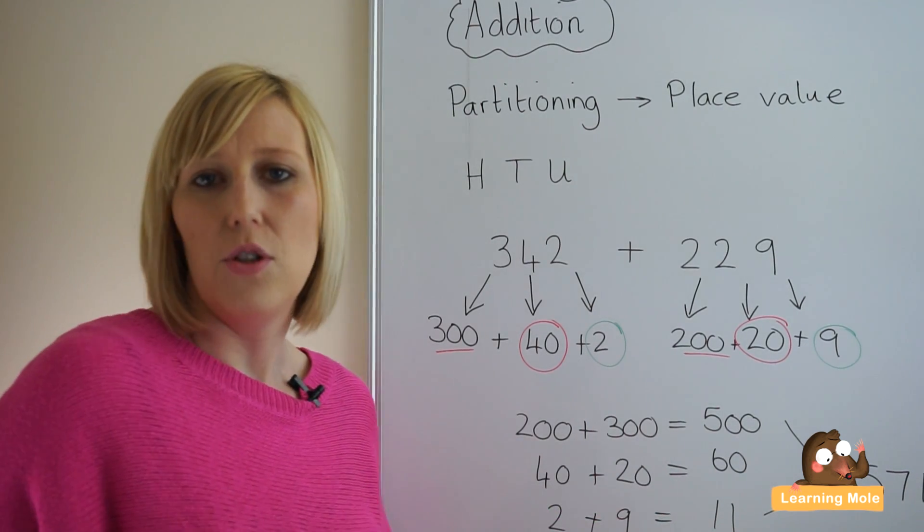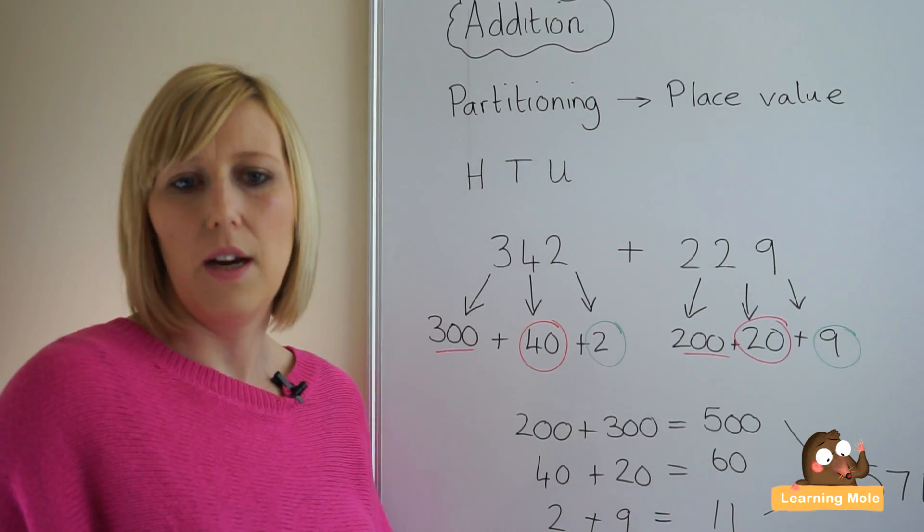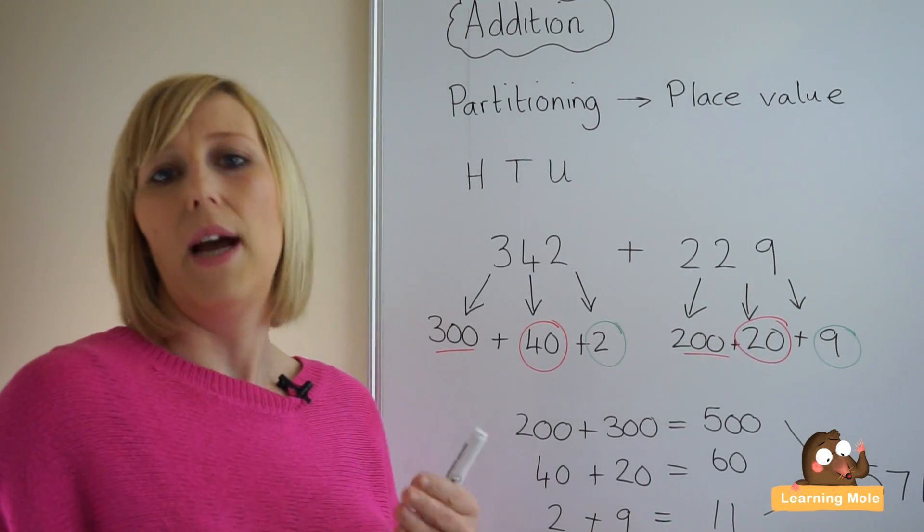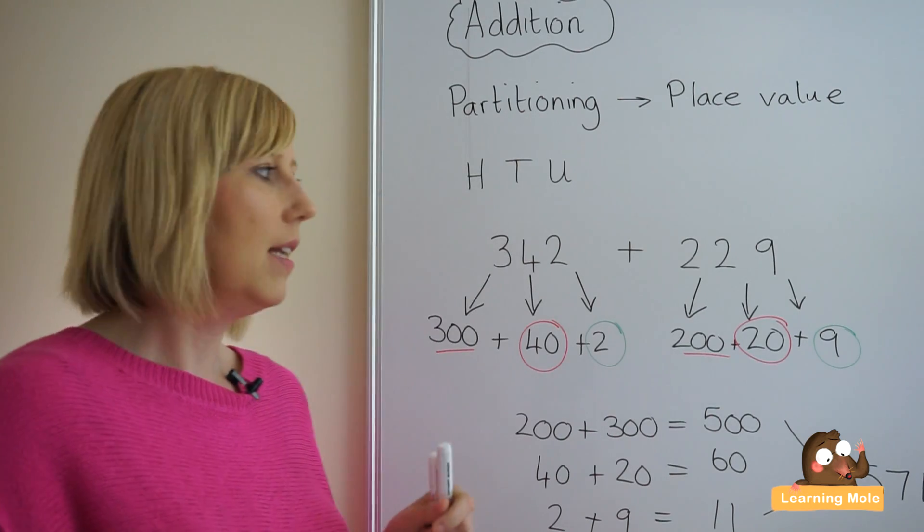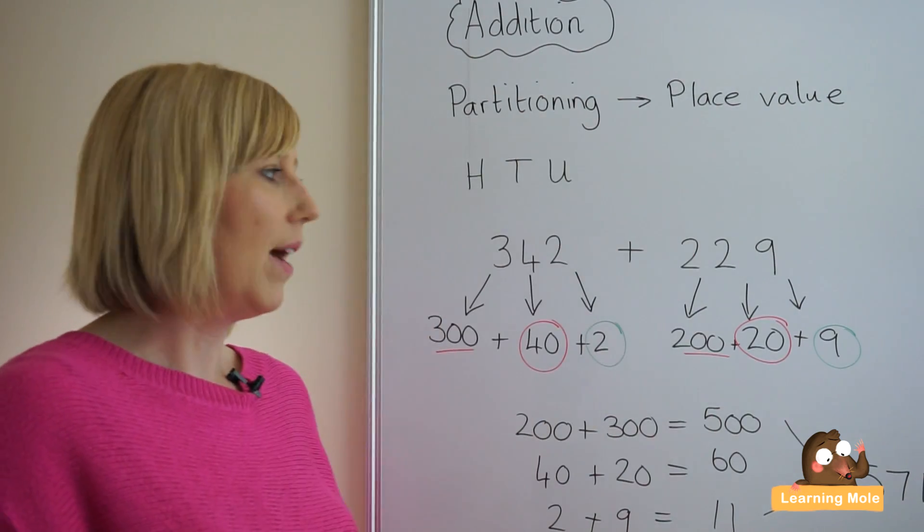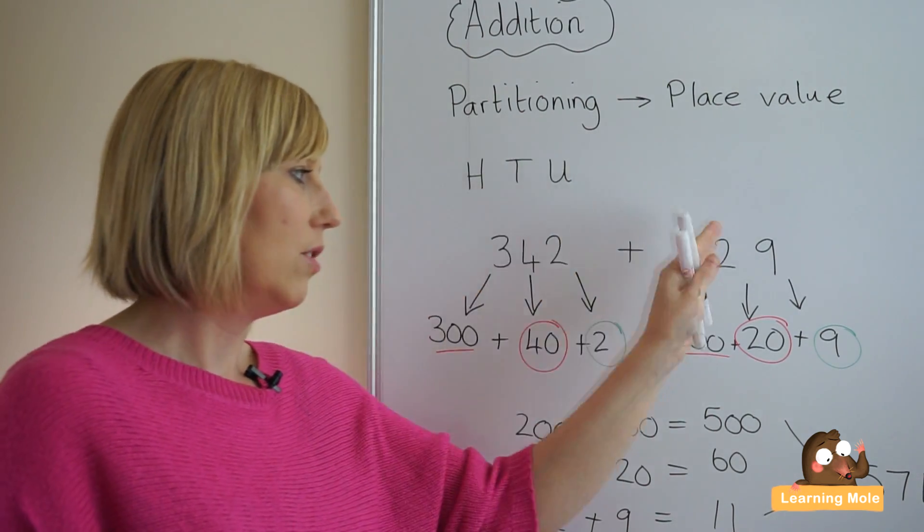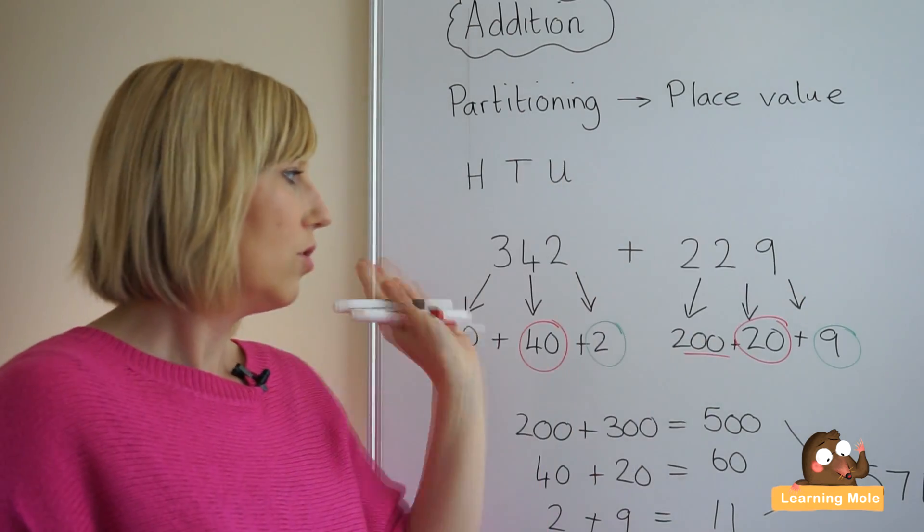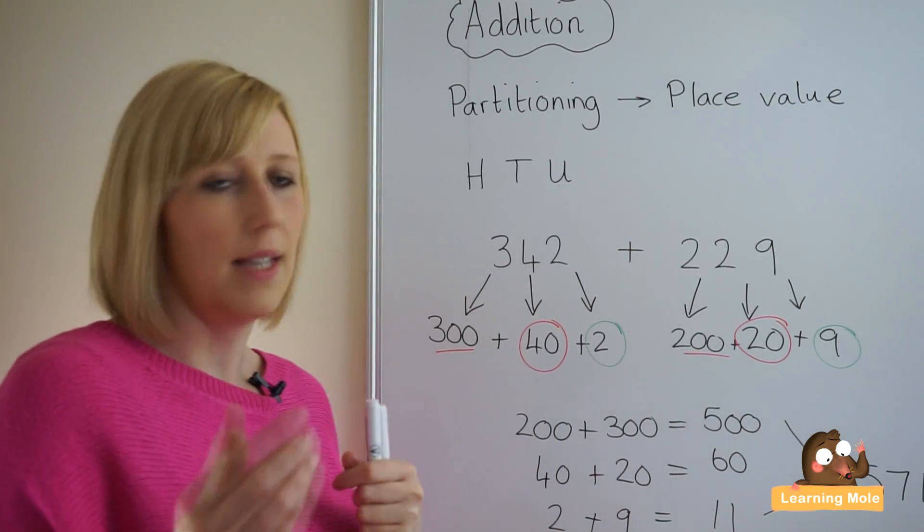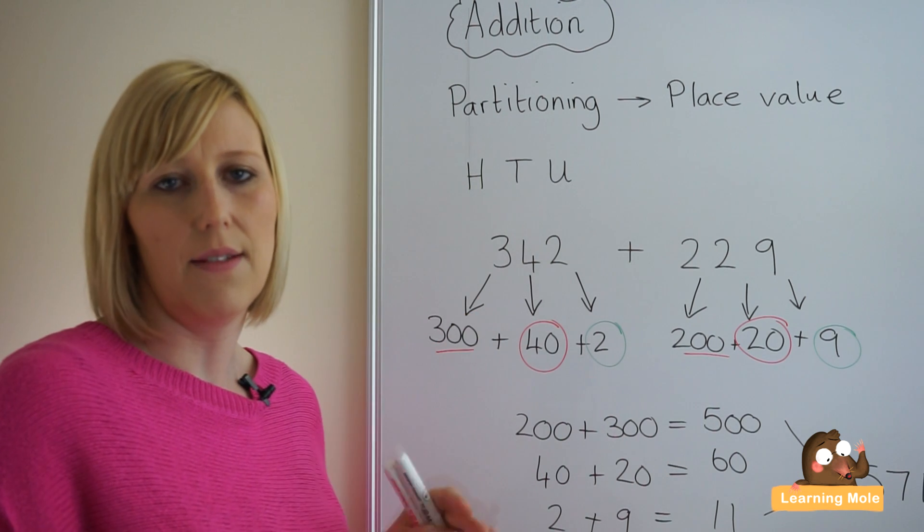If they're able to do that on paper, then start to ask them to try and do it in their heads. They're thinking, I know that 300 and 200 is 500, 40 and 20 is 60, 2 and 9 is 11, which is 71, 571.